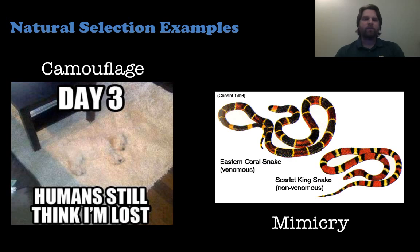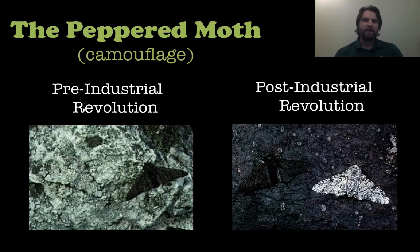Now we're going to look at a couple of natural selection examples — camouflage and mimicry. A great example of camouflage is the peppered moth.